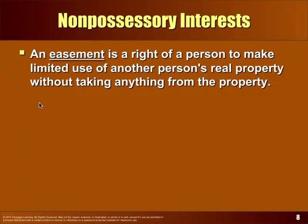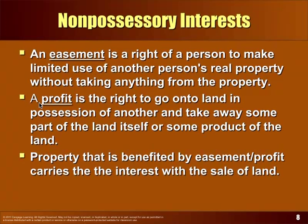Those are what the book calls possessory interests — if you have them, you're entitled to stay there. Non-possessory interests give you a right to use land but it's not yours to stay on. Some examples include an easement and a profit. An easement might be by necessity — the only way you can get to your property is across someone else's property. Common driveway, utilities, boat launch, or beaches are examples.